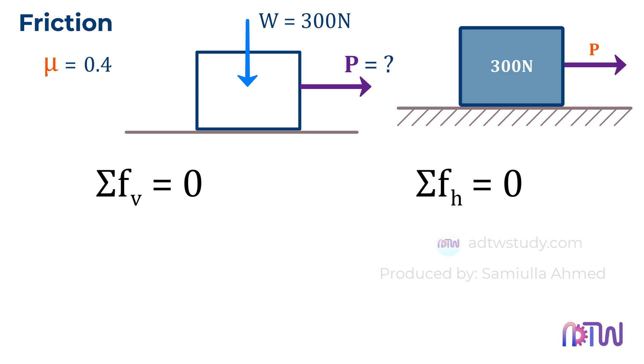In the case of vertical forces, since the weight W of the box is acting downward, the surface will offer a counteracting force known as the normal reaction. This normal reaction force is equal to the weight acting on the ground. Therefore, the normal reaction force is also equal to 300 newtons.